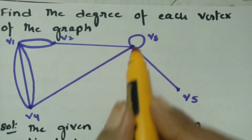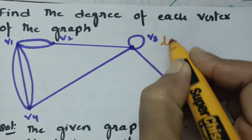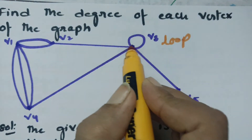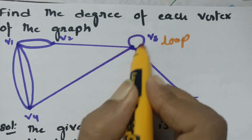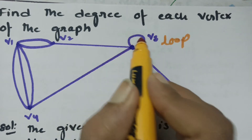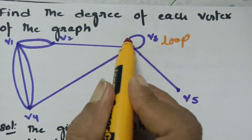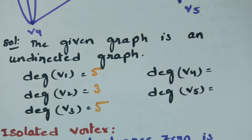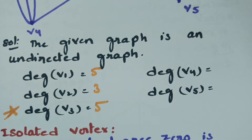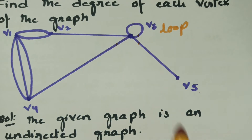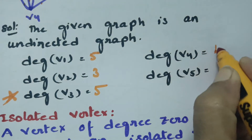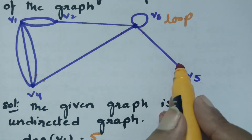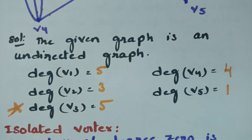Coming to v3, there is a loop here. We have to consider the loop in both directions — 1 in this direction and 1 in this direction — so it counts as 2. Total edges: 1, 2, 3, 4, and 5. Therefore the degree of v3 is 5. For v4, there are 4 edges incident with it, so the degree is 4. And for v5, there is only one edge incident, so the degree of v5 is 1.